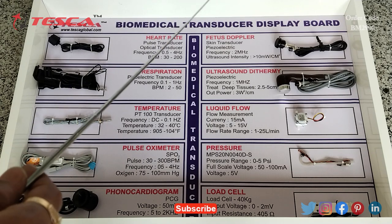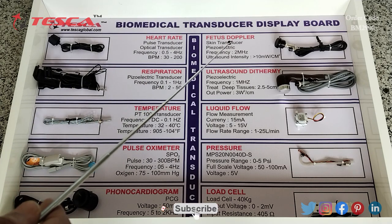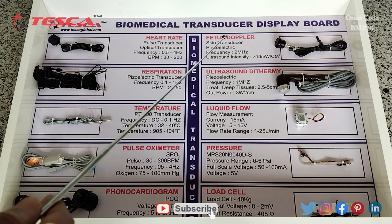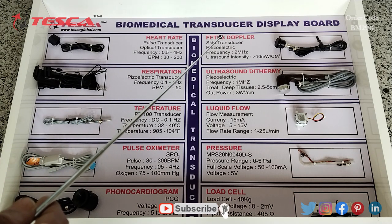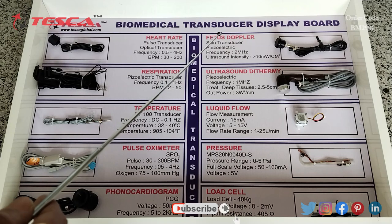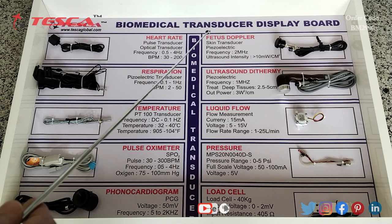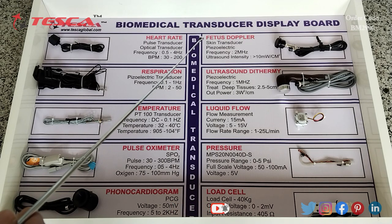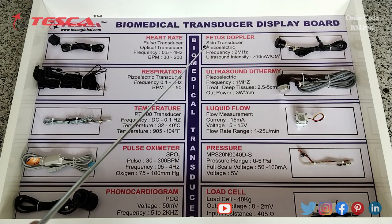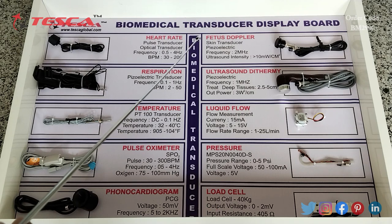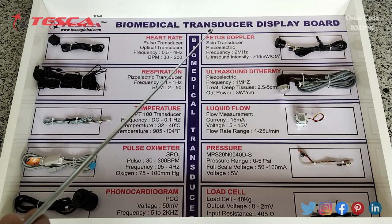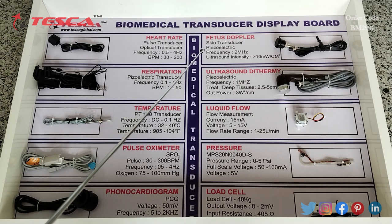Then this is the fetus Doppler. It is a type of kin transducer. Its frequency range is 2 megahertz and its ultrasound intensity is 10 mW per centimeter square.